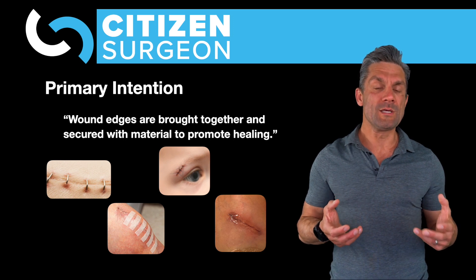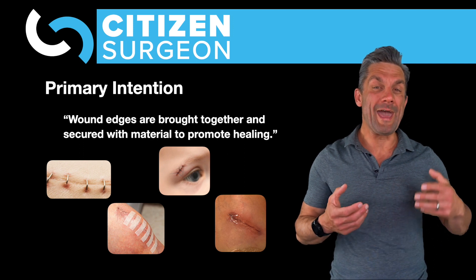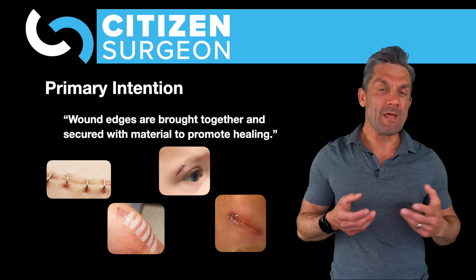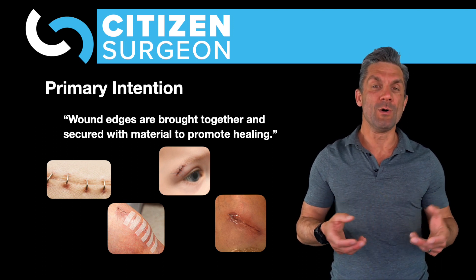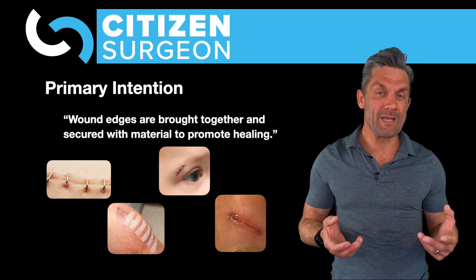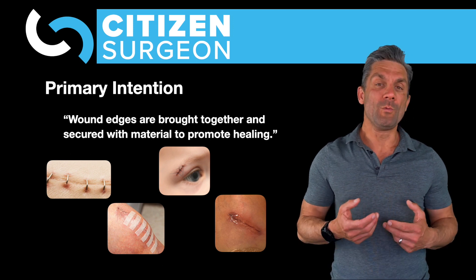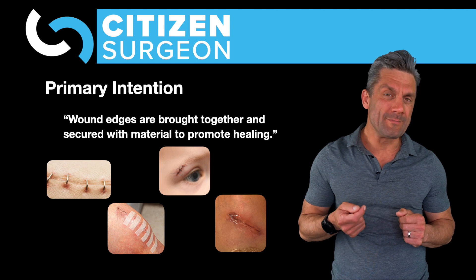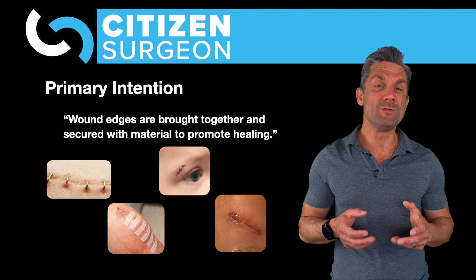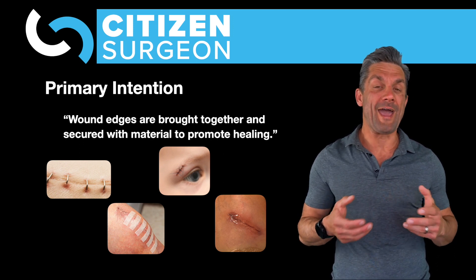Another way to close wounds is by steri-strips. I'll show you a picture of a wound I had on my leg that I was able to effectively close with steri-strips. Another way is sutures — here is a little boy's eye wound, perhaps a traumatic laceration or a dermoid removed from the eyebrow region, closed with interrupted sutures. If you are closing sutures in a child, I highly recommend using an interrupted absorbable suture like a 5.0 fast-absorbing suture.